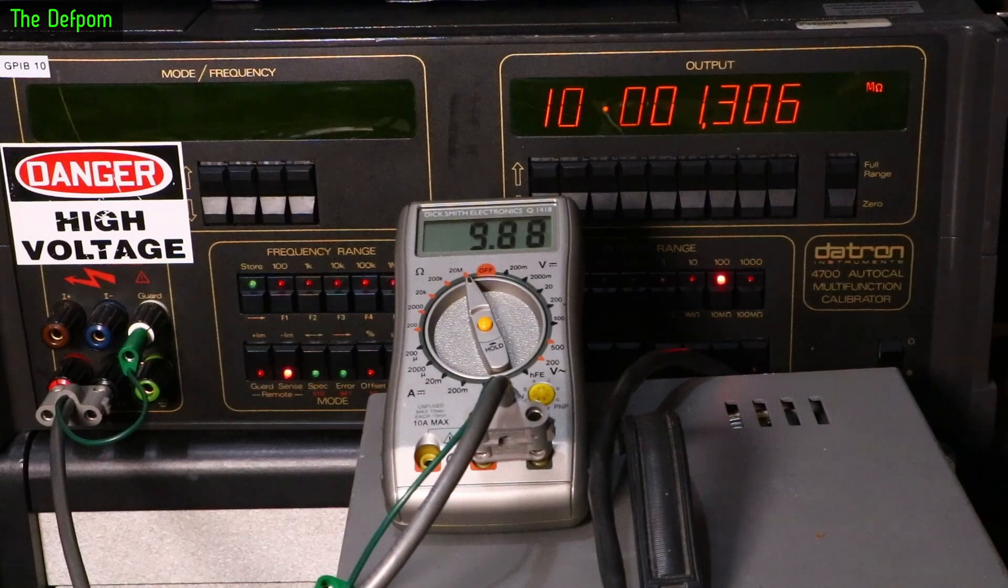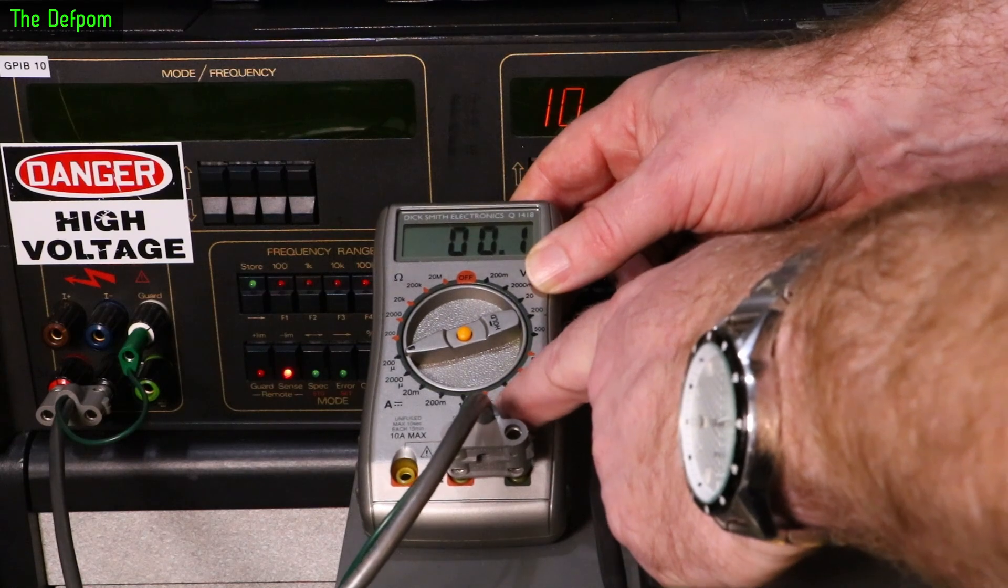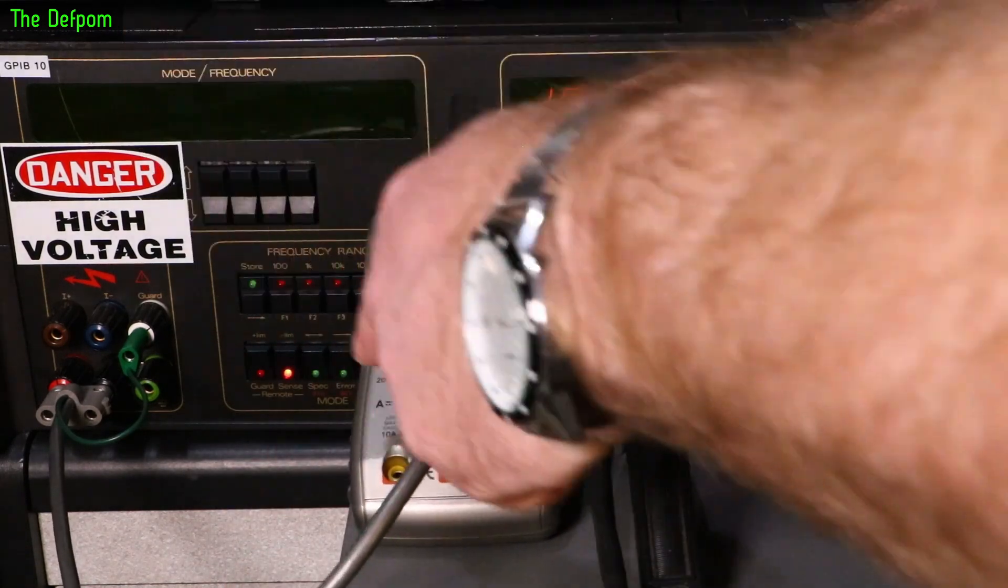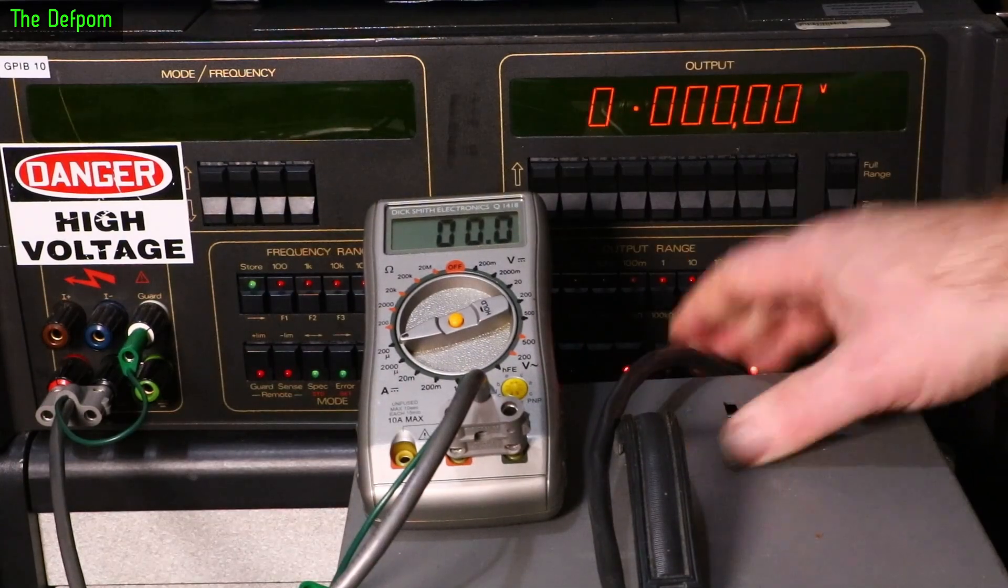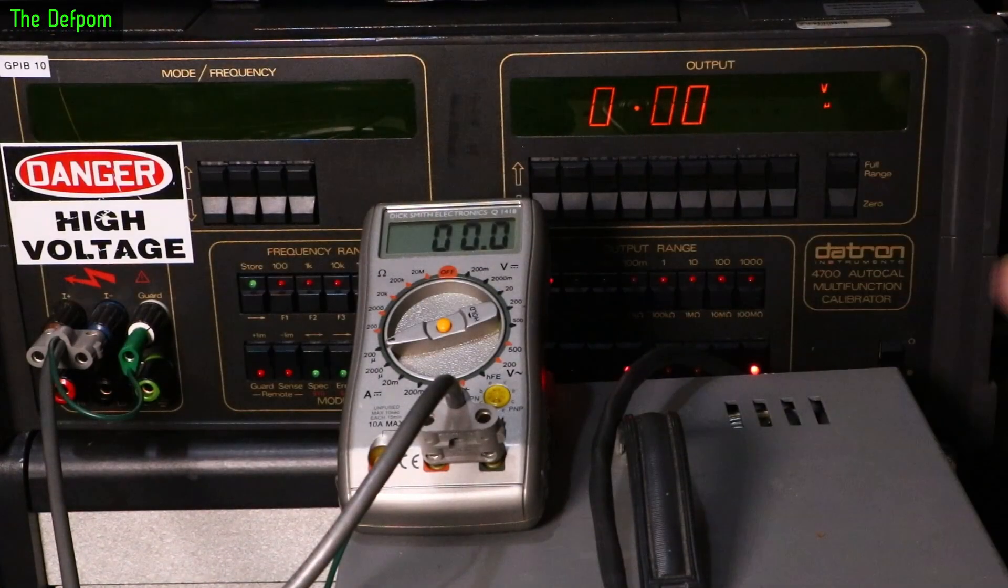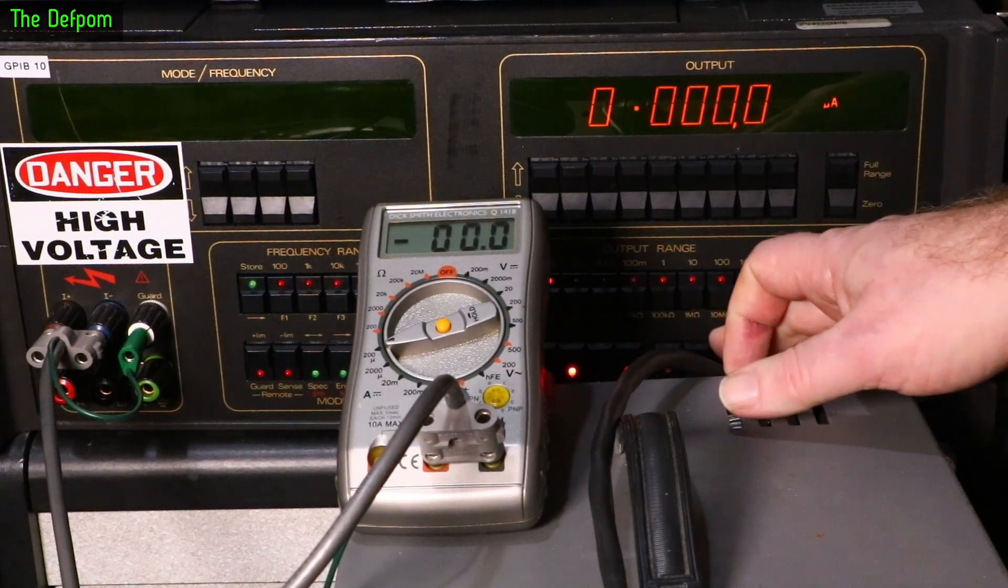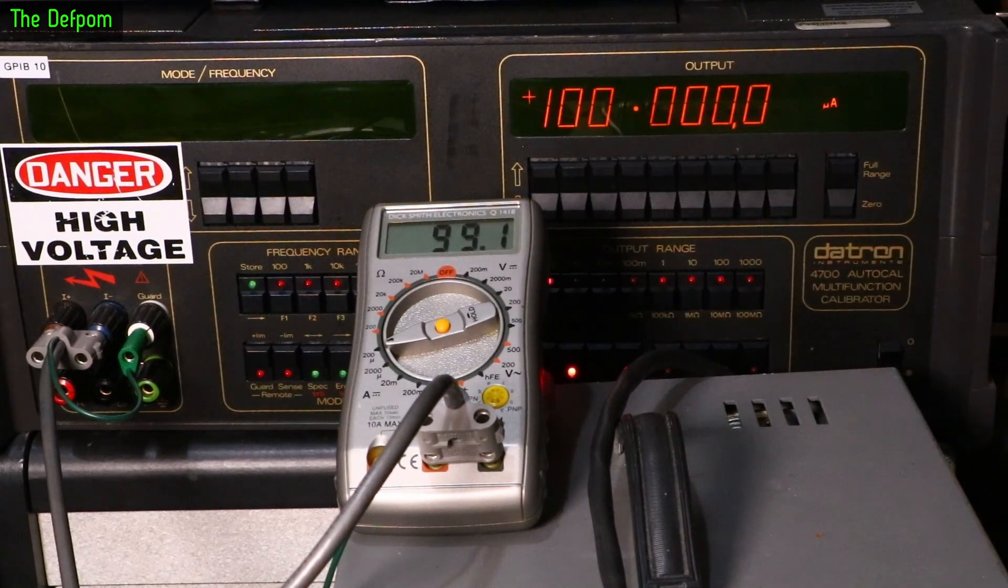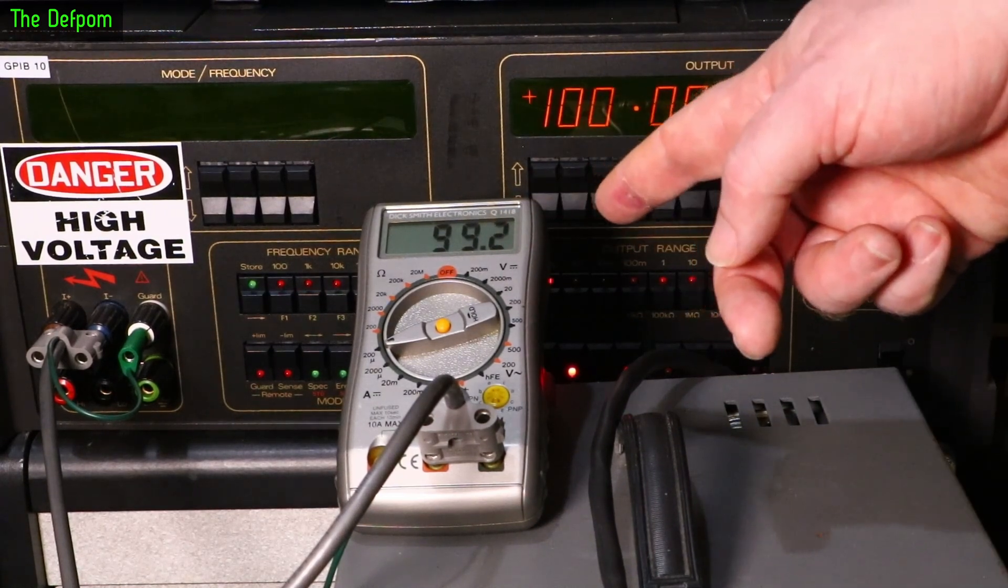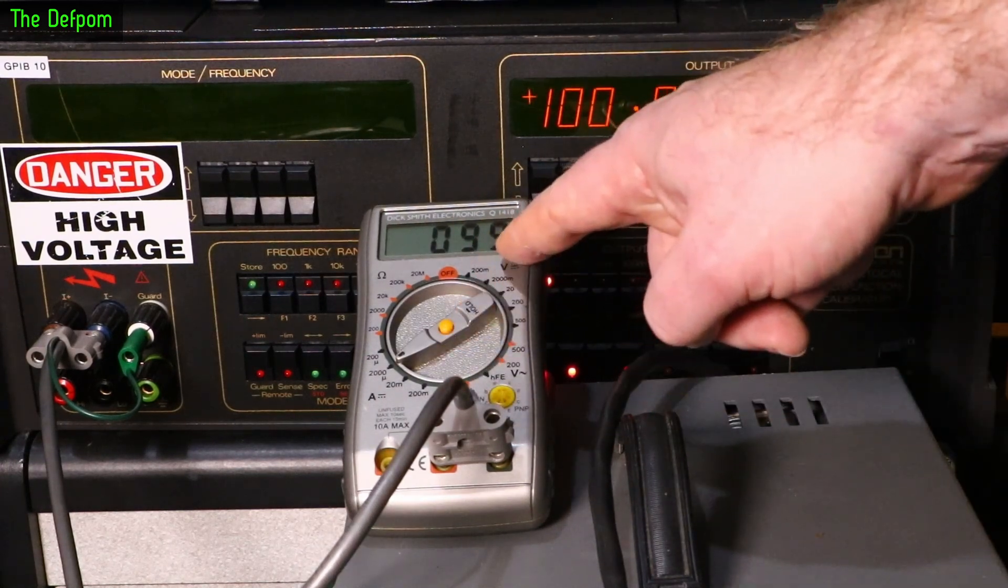So we've got this low range here which is only for milliamps, 200 milliamps max. So we'll do that there. That's to change the leads over to do the higher current. Let's get it down to DC. This is only DC amps, doesn't do AC amps. Plug that in there, plug that into lowest range, DC current. Turn it up and on. So we're doing zero microamps and that's what we're showing. 100 microamps, nine counts out. That's actually not bad. 100 microamps on the 2 milliamp range, it's actually looking pretty good.